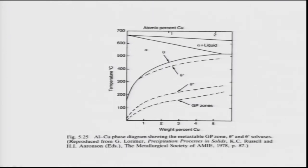The most important alloy is aluminum 4 weight percent copper, known as Duralumin. The typical heat treatment cycle that leads to precipitation hardening works as follows.